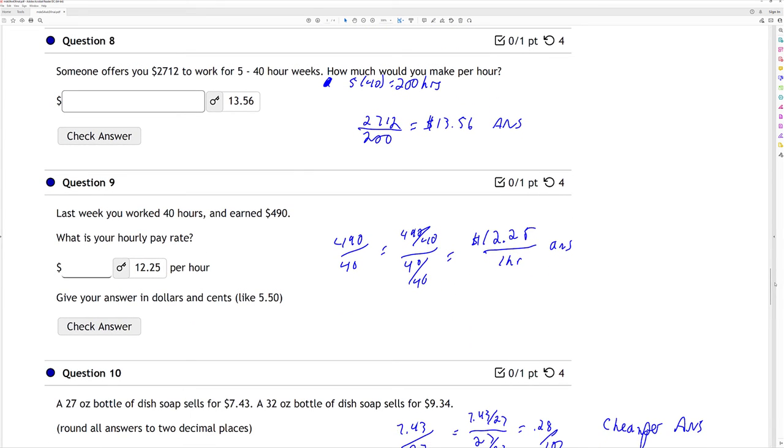Question 8. So an office uses $2,712 worth over 540 hour weeks. How much is that per hour? So 5 times 40 is $2,712. You divide that, you end up with $13.50 per hour.